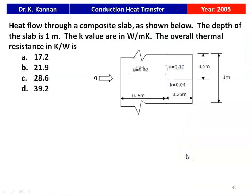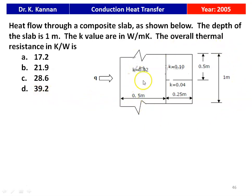The next question is from the 2005 question paper — heat flow through a composite slab as shown. The slab has parallel resistances. First slab thickness 0.5 m, K = 0.02 W/mK. The second section has two parallel slabs of thickness 0.25 m: top K = 0.1 W/mK, height 0.5 m; bottom K = 0.04 W/mK, height 0.5 m. Total height is 1 m, depth 1 m. The overall thermal resistance options are 17.2, 21.9, 28.6, and 39.2 K/W. The answer is 28.6.